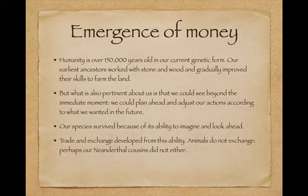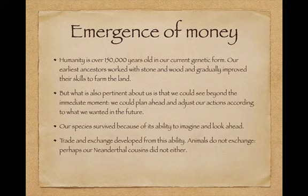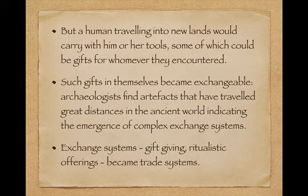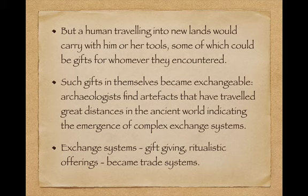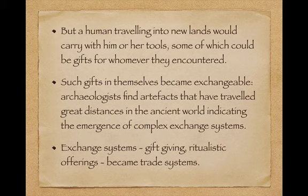Trade and exchange developed from this ability. Animals don't exchange — there are one or two experiments where monkeys in cages will exchange little coins for food or for sex, but they don't engage in complicated trading systems across tribal systems. Perhaps our Neanderthal cousins didn't either. They died out about 10,000 to 12,000 years ago and there's no evidence as yet, though new evidence is always forthcoming from archaeologists, that they traded. But a human travelling into new lands would often carry tools with them. Some of these tools could be gifts for whomever they encountered on the way, and such gifts in themselves become exchangeable. Archaeologists find artefacts that have travelled great distances across the ancient world, indicating the emergence of complex exchange systems.